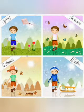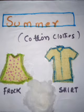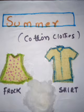Today's topic is Seasons and Types of Clothes. First, the summer season. In summer we wear cotton clothes. Cotton clothes are made of cotton, and we get cotton from cotton plants. We wear cotton clothes in the summer season to keep us cool.